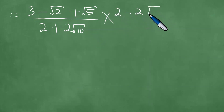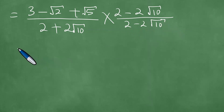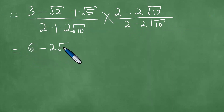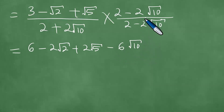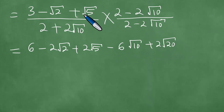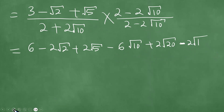Multiply by 2 minus 2 times the square root of 10, divided by 2 minus 2 times the square root of 10. Now we multiply through by 2: 2 times 3 is 6, minus 2 times the square root of 2, plus 2 times the square root of 5. Multiply through by negative 2 times the square root of 10: negative 2 times the square root of 10 times 3 is minus 6 times the square root of 10. Multiplying gives us plus 2 times the square root of 20, and minus 2 times the square root of 50.